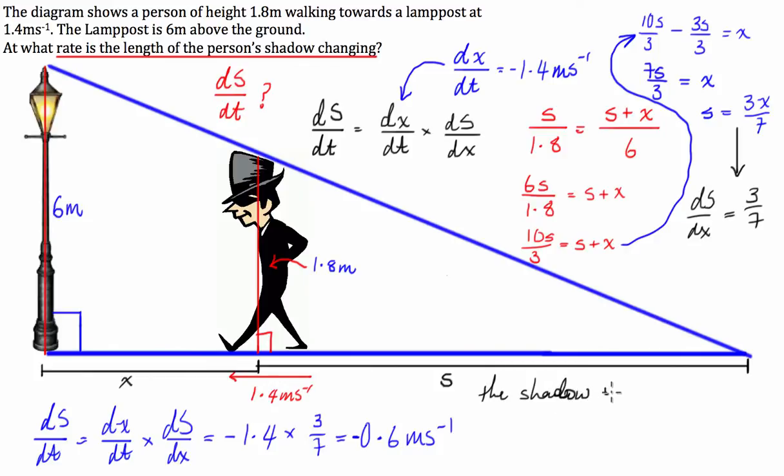So finally, you can write: the shadow is decreasing in length at a rate of 60 centimeters per second.